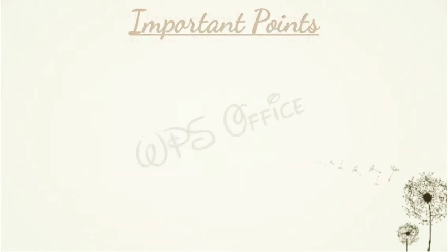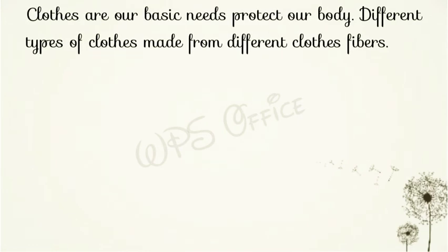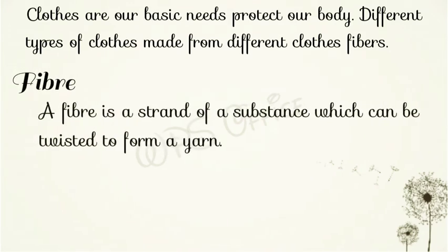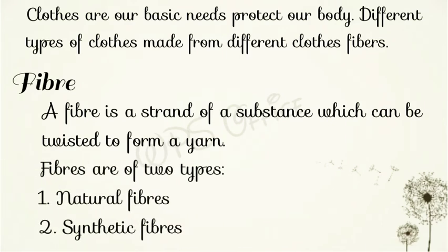Clothes are one of our basic needs to protect our body. Different types of cloths are made from different fibers. So what is fiber? Fiber is a strand of a substance which can be twisted to form a yarn — यानी रेशा एक पतला धागा या strand होता है जिससे मोड़ करके धागे में बदला जा सकता है।